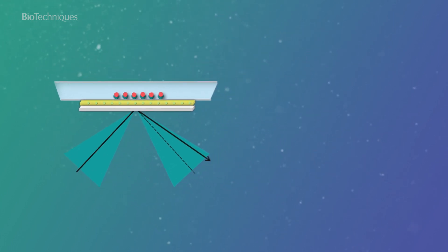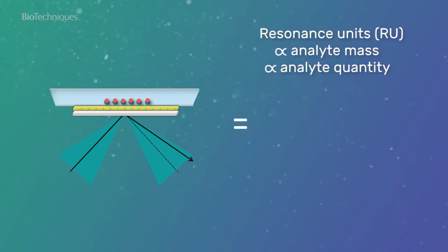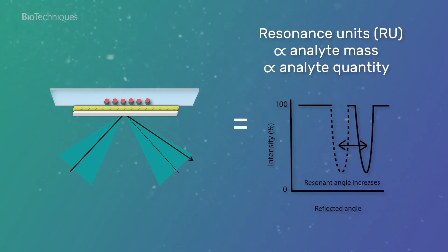When the refractive index changes, the resulting signal is recorded in resonance units. Resonance units are both proportional to the total mass of the bound material, as well as the number of bound biomolecules.